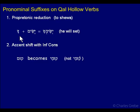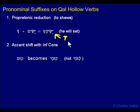So yassim plus -cha becomes yassimcha. So effectively what's happened here is you've lost your qamets, and if you're looking for the qamets as the marker of the hollow verbs, then be aware that if you have a pronominal suffix, you'll lose that sign.